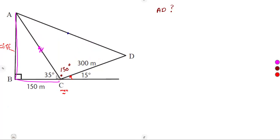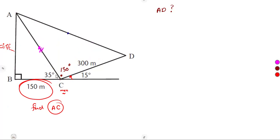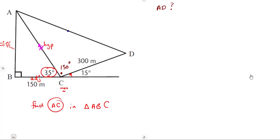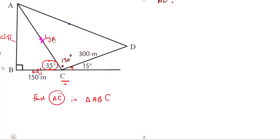From triangle ABC, it is a right-angled triangle, so we can find the length AC as long as we have a length and an angle. According to the 35-degree angle in triangle ABC, BC is the adjacent side and AC is the hypotenuse. The only ratio using adjacent and hypotenuse is cosine. So cosine of 35 degrees equals adjacent over hypotenuse, which is 150 over AC.